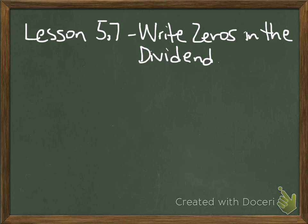In Lesson 5.7, what we're going to do is write zeros in the dividend when we're dividing. And we're going to do that because we don't want our answer to have a remainder. We want our answer to be in decimal form.